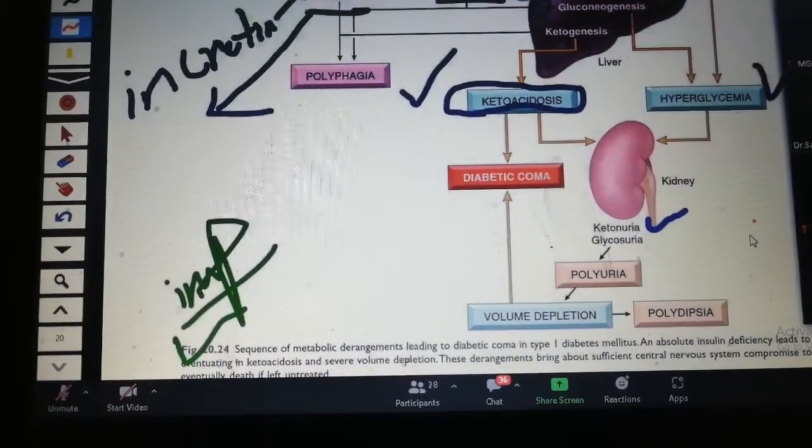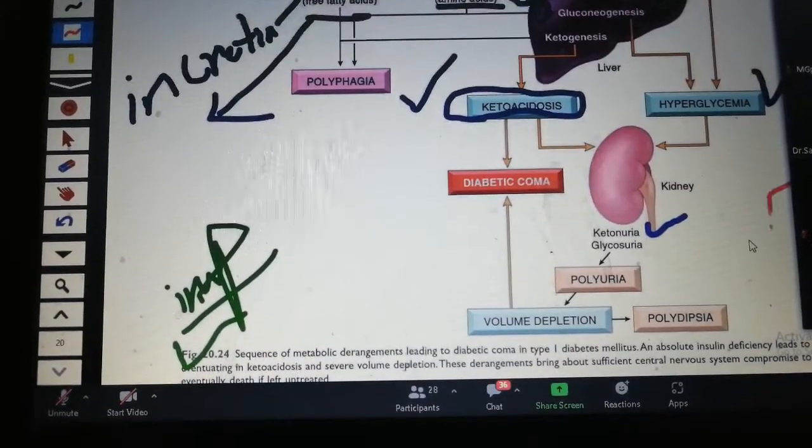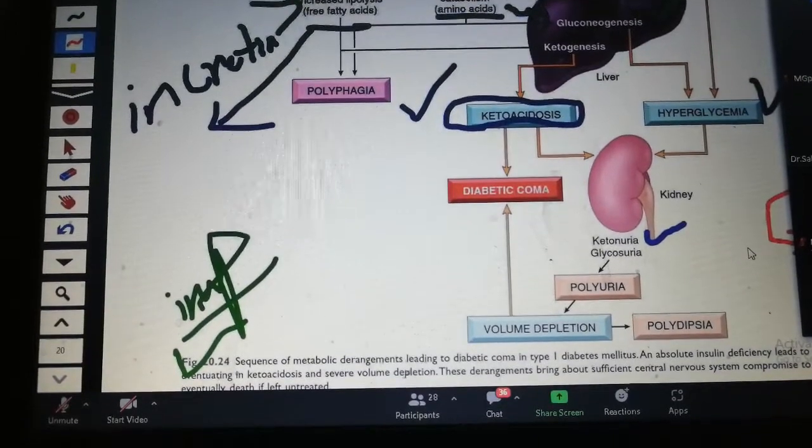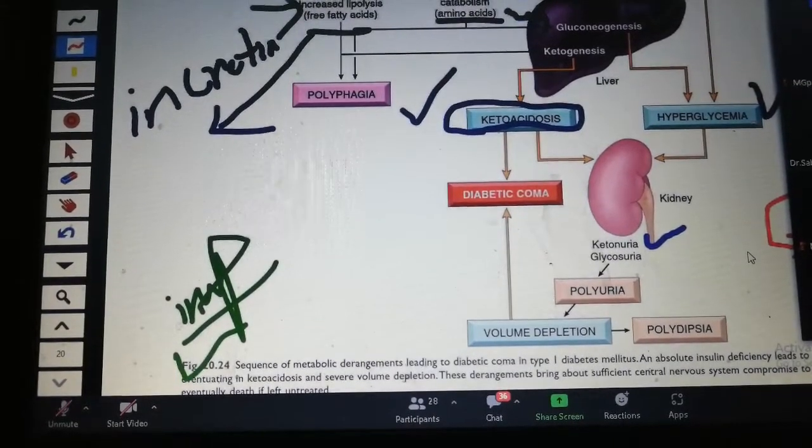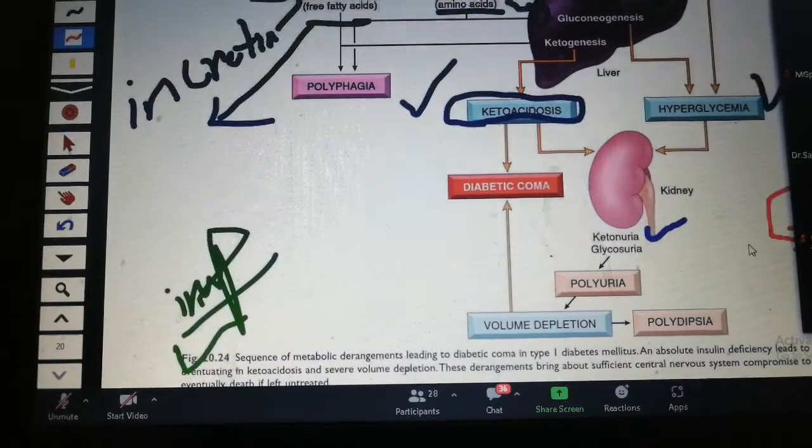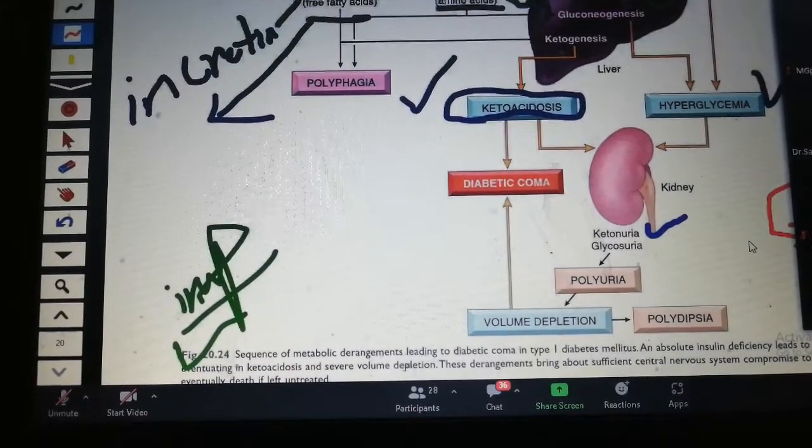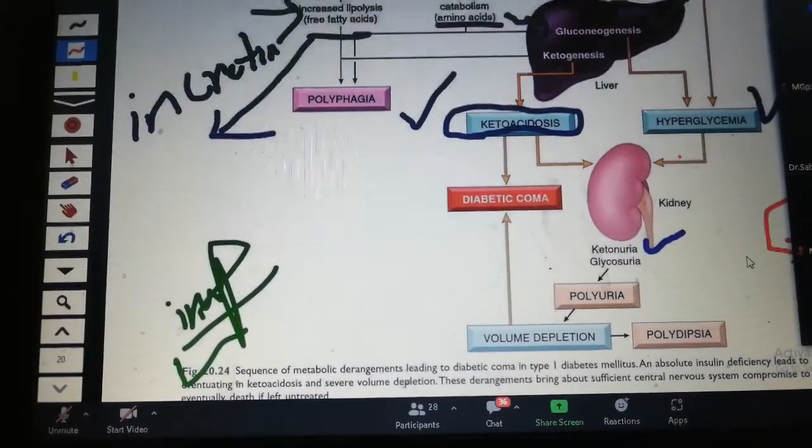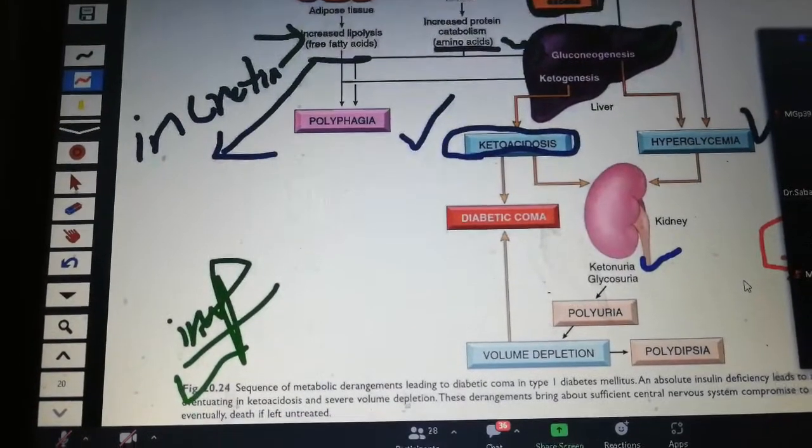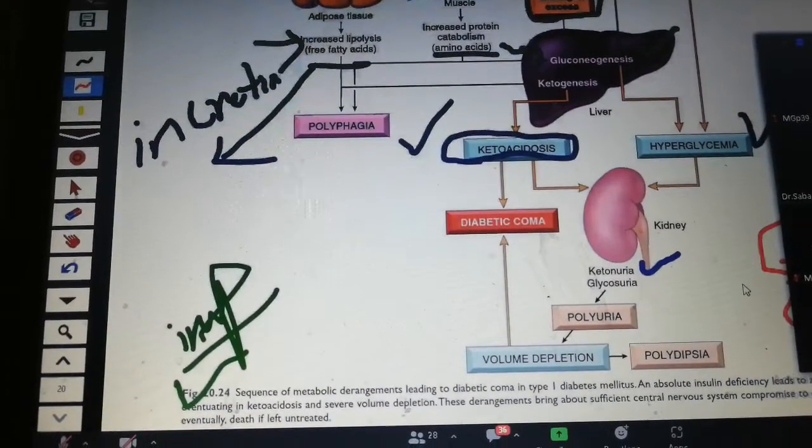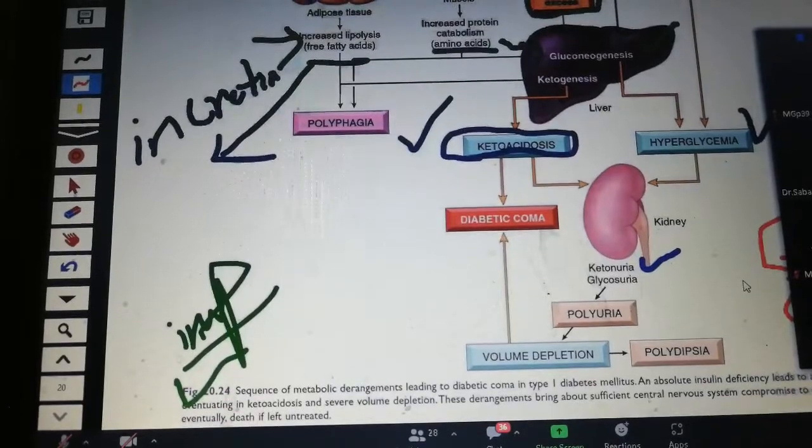For example, if you have 10 glucose molecules in the blood, this is hyperglycemia. When you have 10 molecules and filter 2 molecules through the kidney, 8 remain.